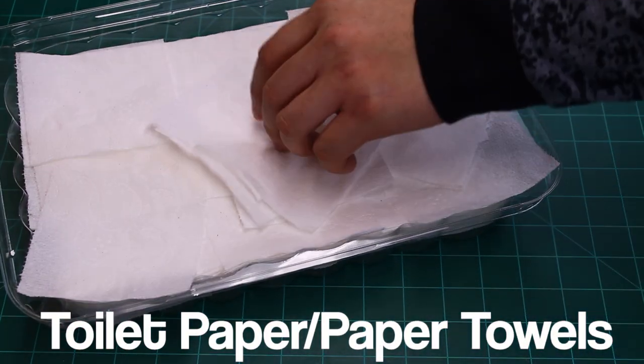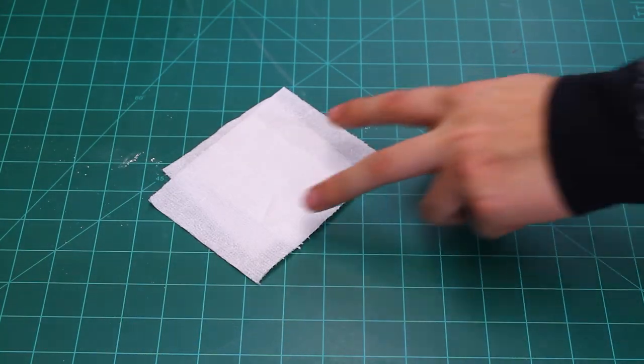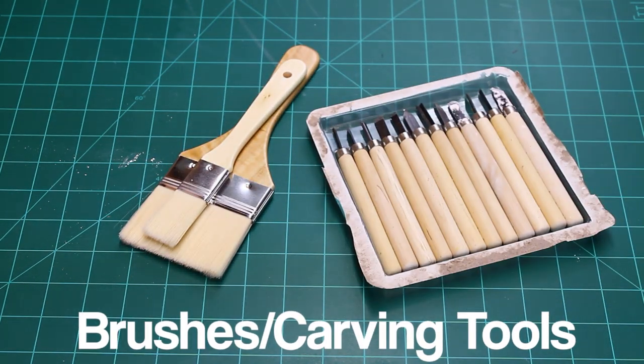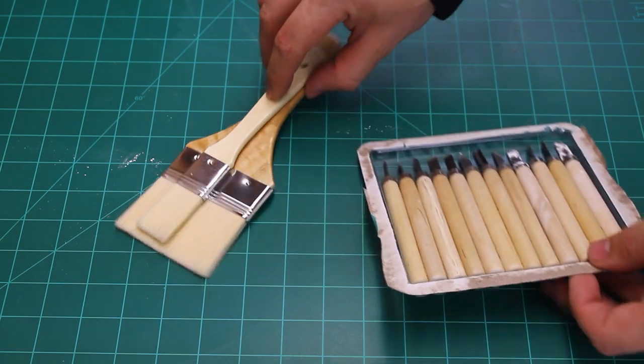Now, we're going with our usual toilet paper or paper towels, whichever one you want to do. This is what I do. I use toilet paper, it's two-ply. And brushes and carving tools. These carving tools are actually for wood, but I found they work really good for plaster.